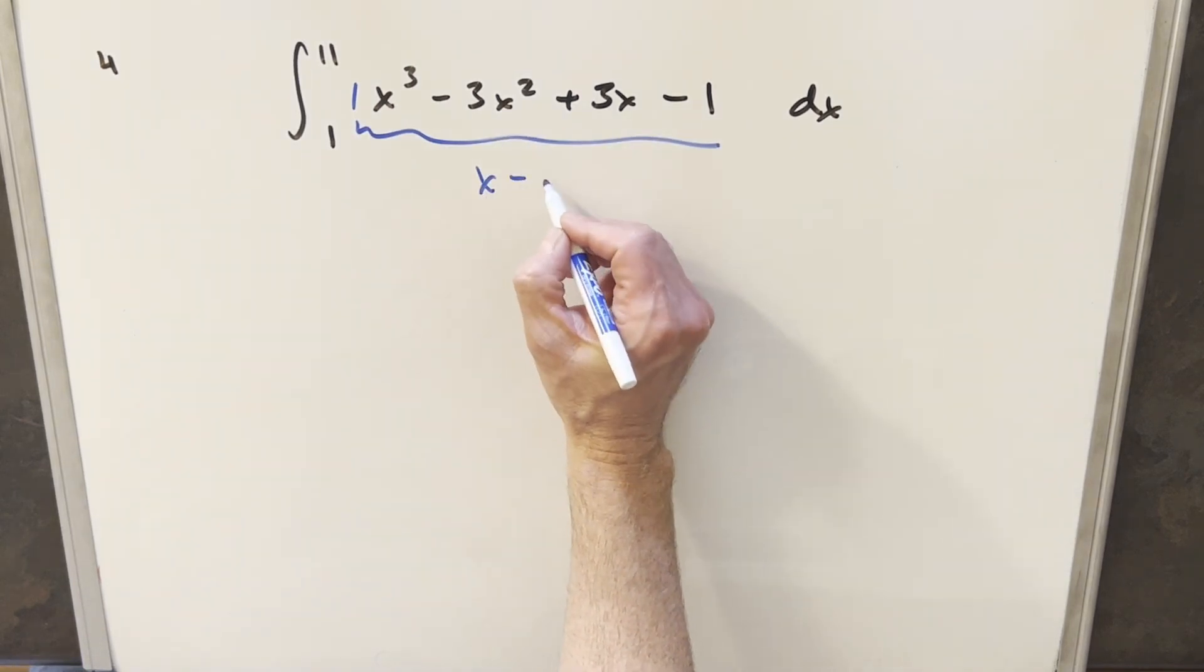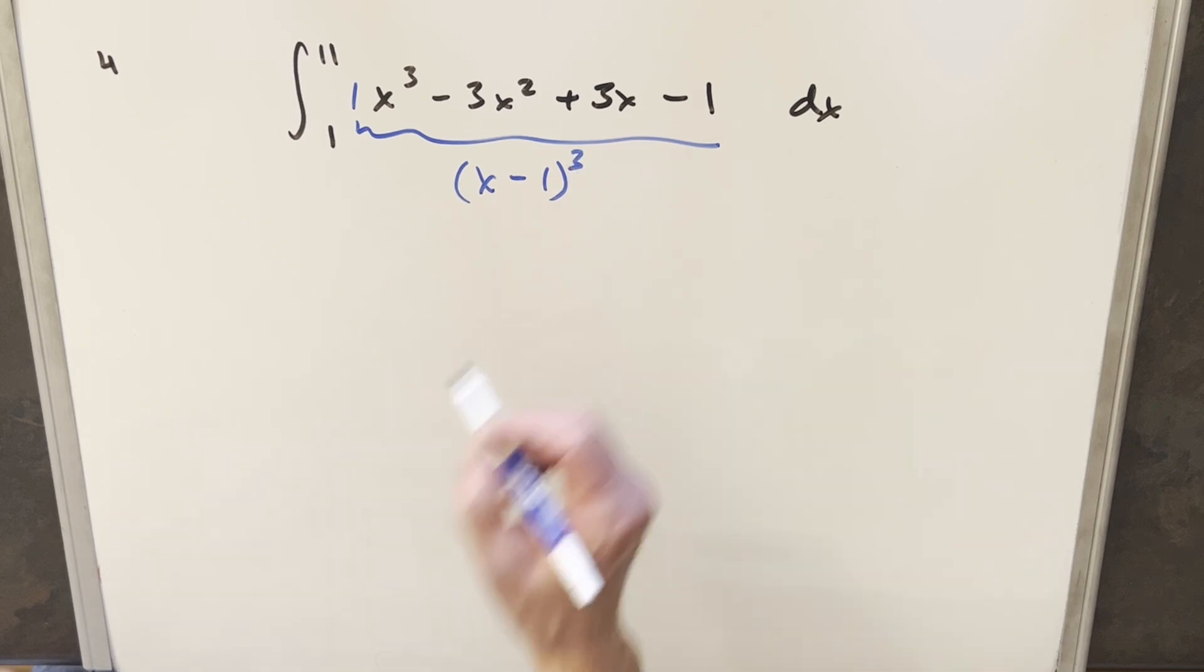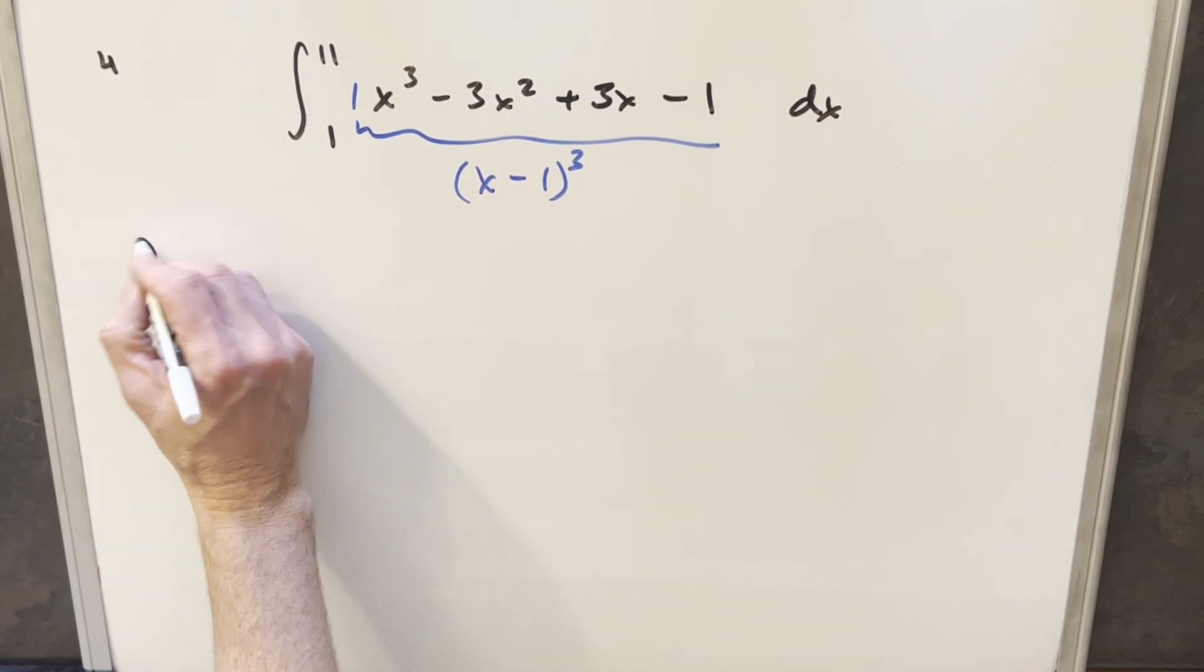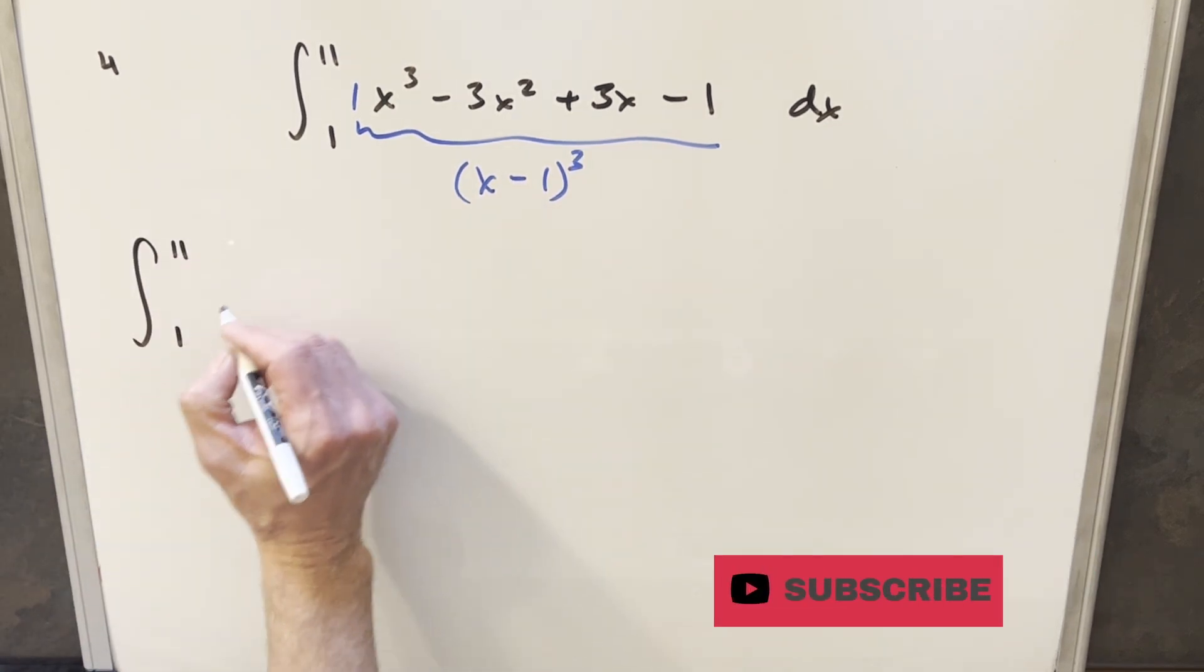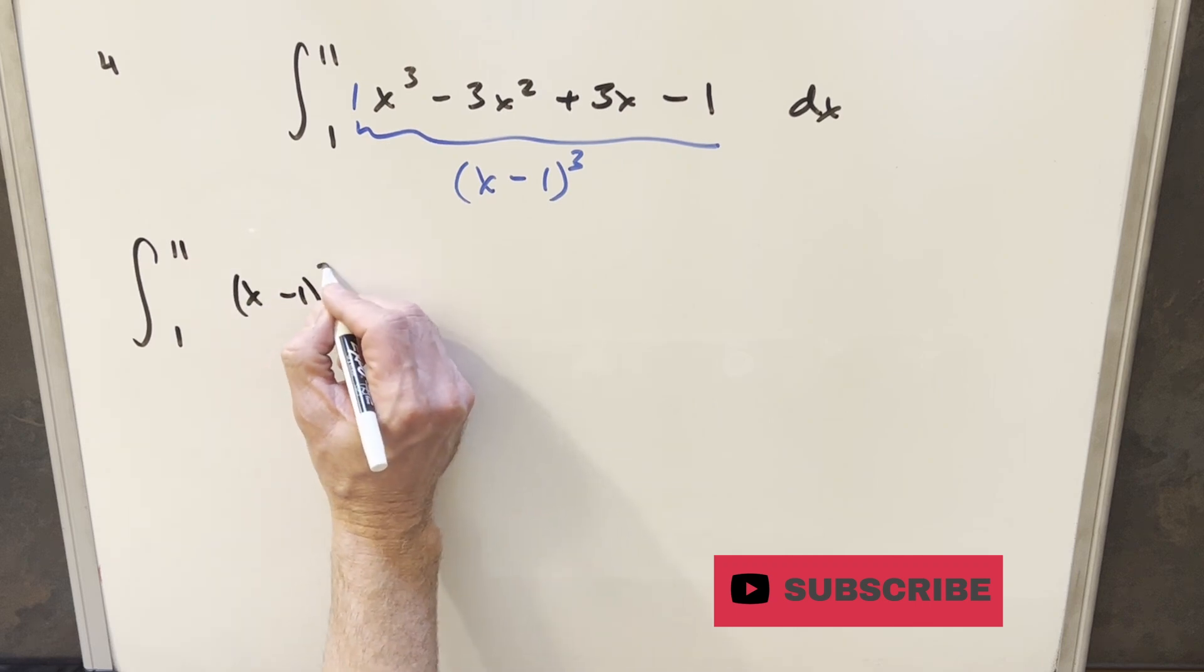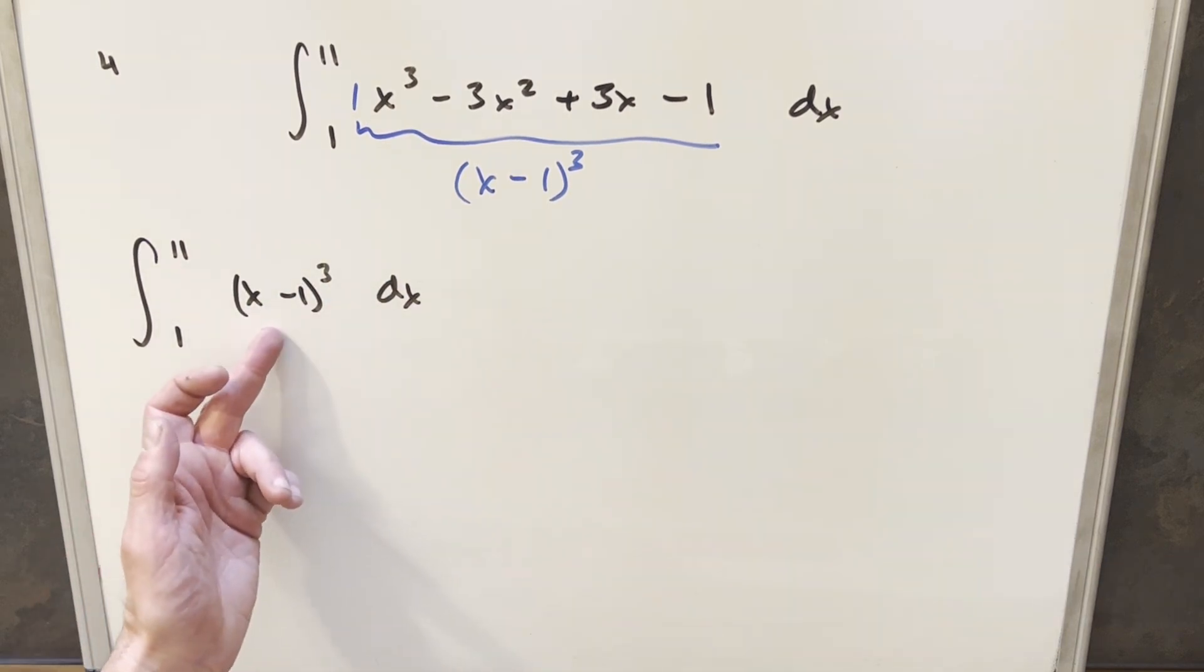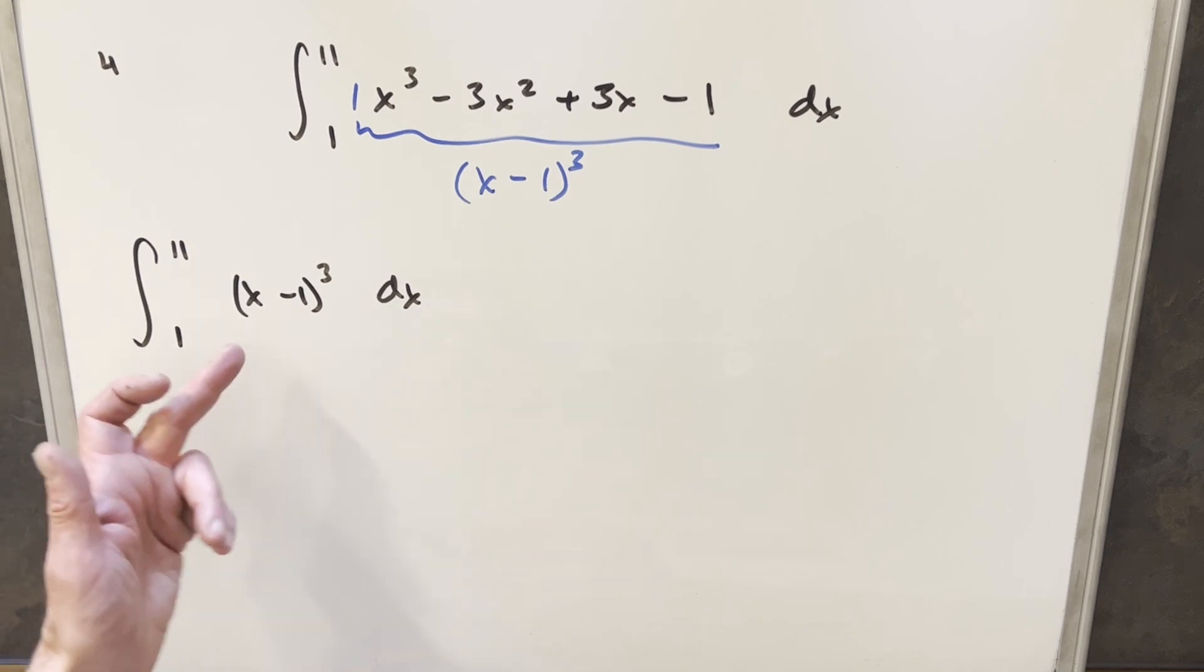This can be rewritten as x minus 1 all cubed, and so now I'll just rewrite this in this form here: x minus 1 cubed dx. And now you could do a u substitution on this, but notice it's really not necessary.